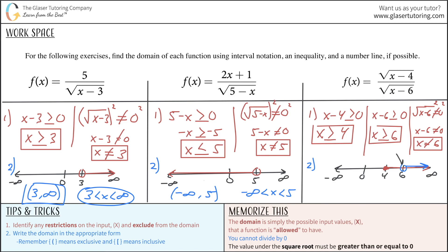Writing that out in interval notation, it would be six, not including it, going all the way out to infinity, not including that. Another way to write this using the inequality would be 6 < x < ∞. And that's it, ladies and gentlemen. I hope this video helped — please subscribe, and we will see you next time. Have a great day.